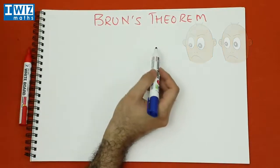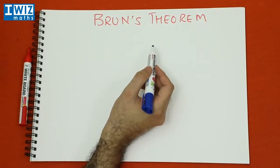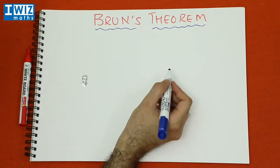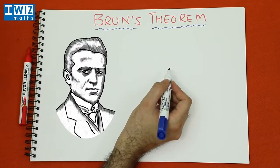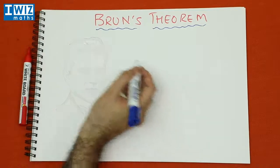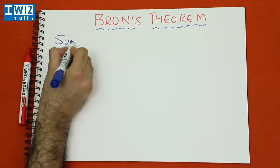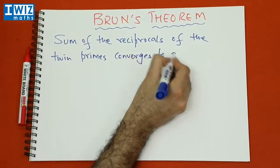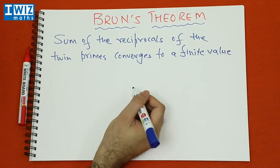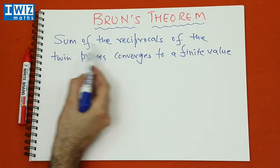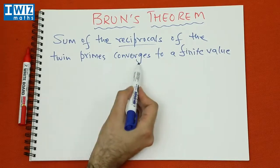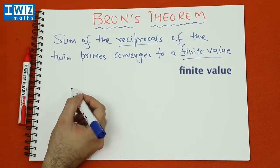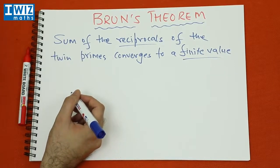Let's outline a rather interesting property of twin primes known as Brun's theorem and this property of the twin primes was proved by a gentleman known as Vigo Brun more than a hundred years ago. And the statement of the theorem is as follows. So the statement of the theorem is that the sum of the reciprocals of the twin primes converges to a finite value.